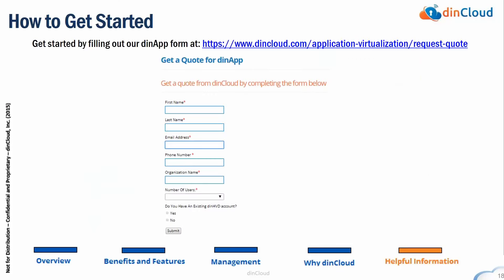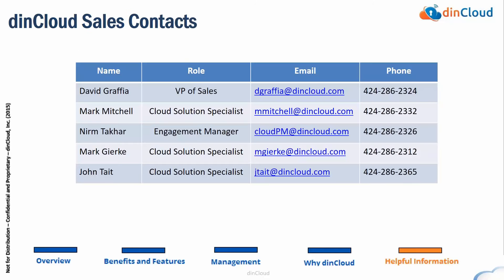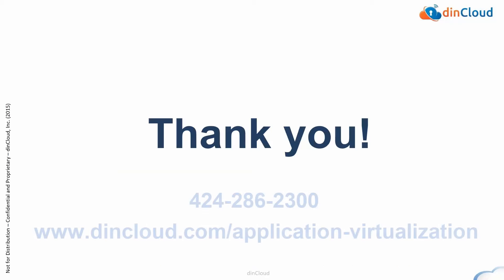For folks who want to learn more, just go to dincloud.com. Go to products and you'll see DIN App — click on that for a form to request a quote or additional information. You can also send an email to sales@dincloud.com, reach out to any of our sales contacts directly, or call our main number at 424-286-2300, prompt one for sales. Thanks everyone for your time — Nancy, I'll turn it over to you.